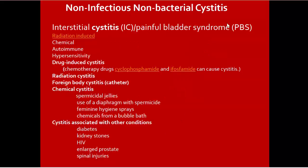Non-infectious non-bacterial cystitis includes interstitial cystitis — the most common type in this category — and painful bladder syndrome. Also included are radiation-induced cystitis, chemical cystitis, autoimmune, hypersensitivity, drug-induced cystitis like cyclophosphamide, foreign body cystitis. Cystitis associated with other conditions includes diabetes, kidney stones, HIV, enlarged prostate, and spinal injuries.